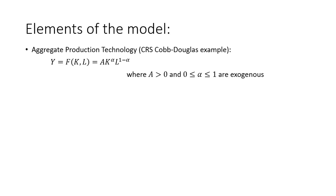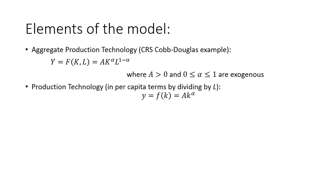Let's discuss first the elements of the model. The very first thing is the aggregate production technology — our famous constant returns to scale Cobb-Douglas production function. We have aggregate output Y as a function of aggregate capital K and labor L. A is total factor productivity, alpha represents the capital share of income, and both are exogenous. We can divide through by L to rewrite the production function in per capita terms, which is always possible with a constant returns to scale technology.